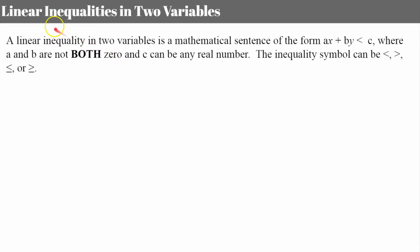So what exactly is a linear inequality in two variables? It is a mathematical sentence in the form ax + by < c, where a and b are not both zero and c can be any real number. The reason a and b can't both be zero is that you would end up with a statement that a number is less than another number — no variable at all. The inequality symbol can be less than, greater than, less than or equal to, or greater than or equal to.